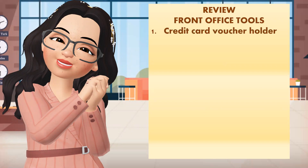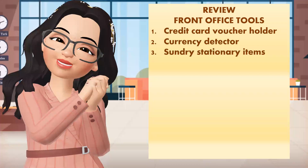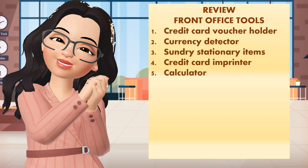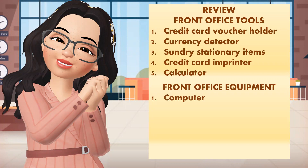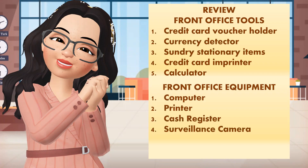Last video lesson we discussed about the different front office tools: the credit card voucher holder, the currency detector, the sundry stationary items, the credit card imprinter, and the file calculator. I also discussed the different front office equipment: the computer, the printer, the cash register, the surveillance camera or CCTV, the telephone, and the fax machine.